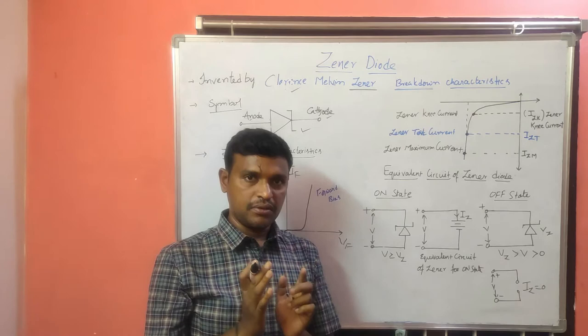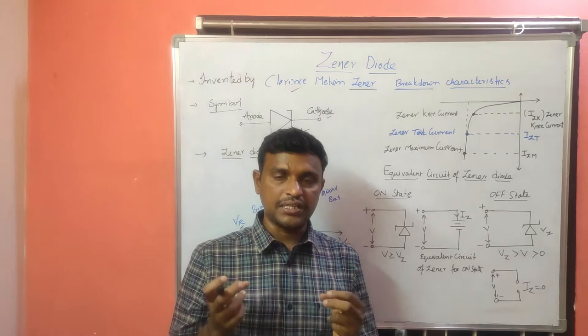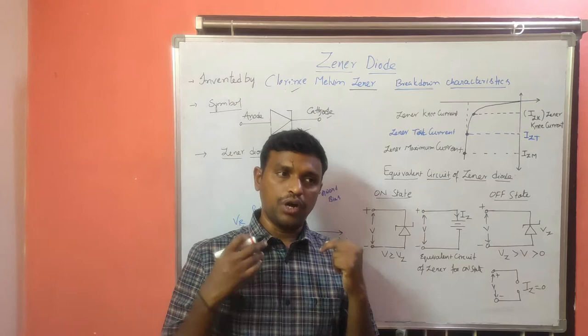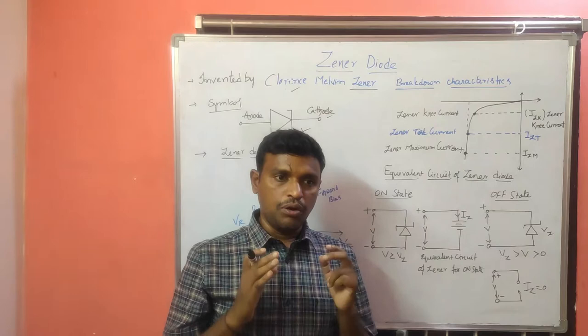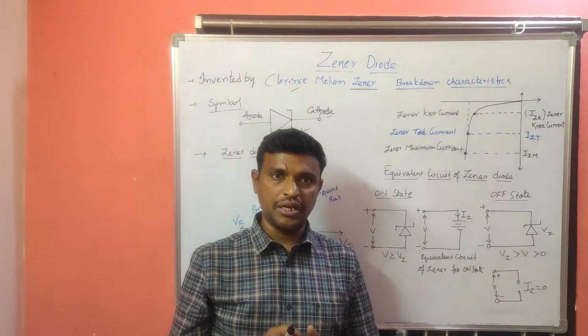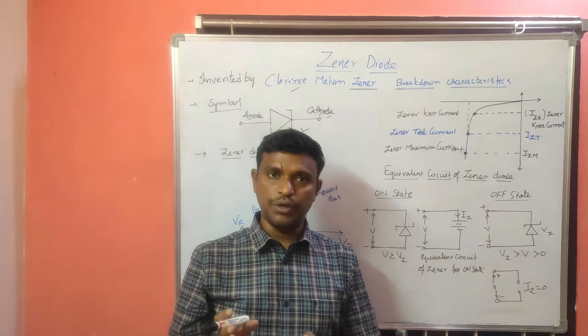We mainly operate this GINA diode in reverse bias condition. Due to that, two breakdowns will occur: one breakdown is avalanche breakdown and another breakdown is GINA breakdown. Avalanche breakdown can be present in both normal PN junction diode and GINA diode, but the GINA breakdown will occur only in the highly doped diodes like the GINA diode.